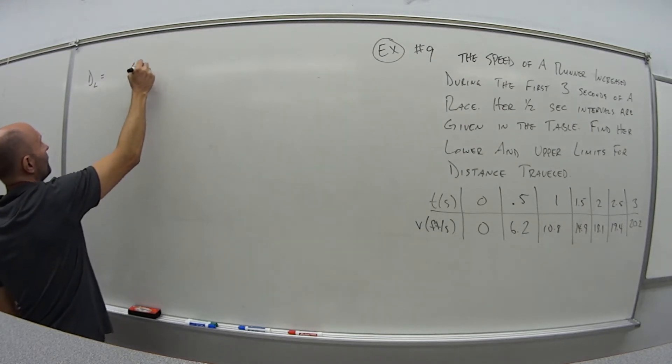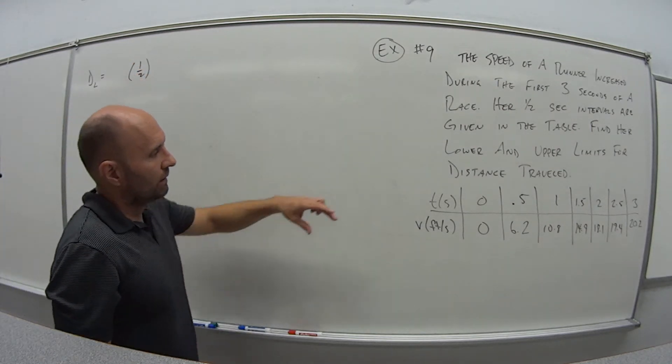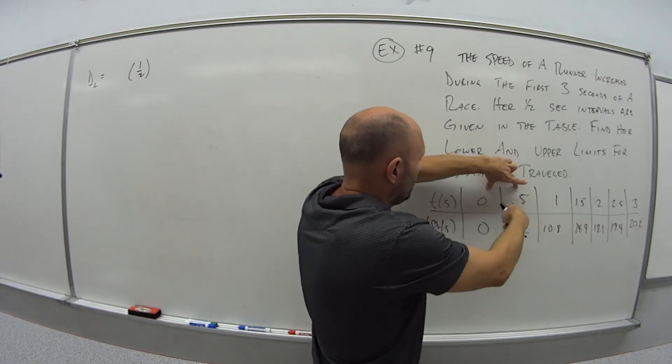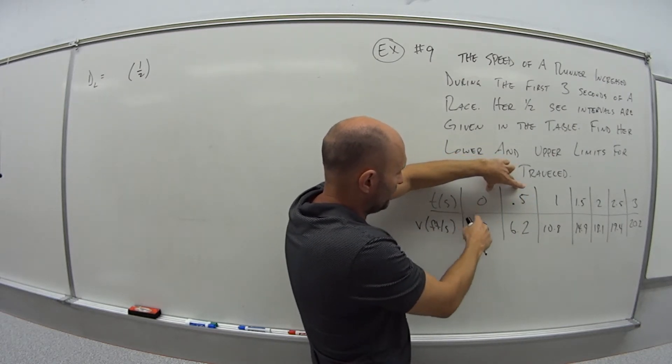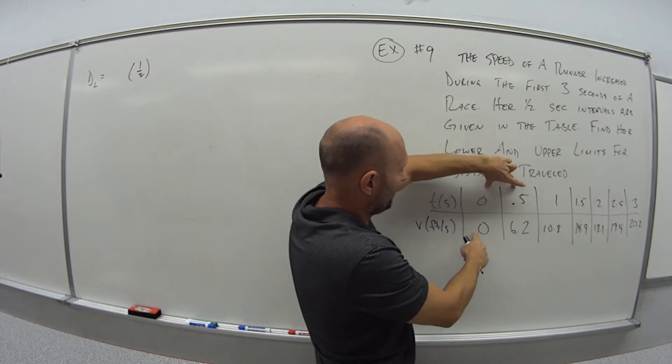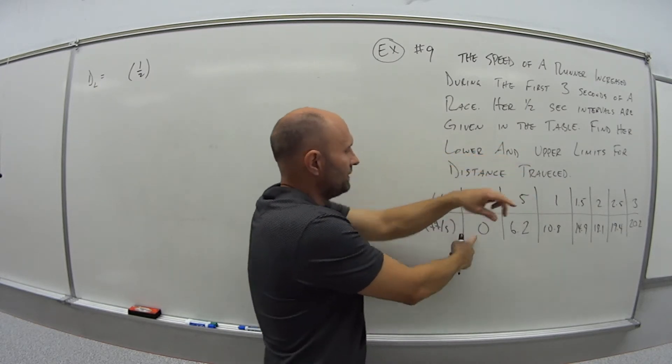And then we're going to be using within this interval the left, the value of the function associated with the left end point. So 0 to 0.5, that value would be 0.